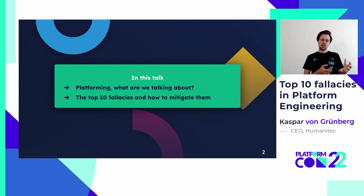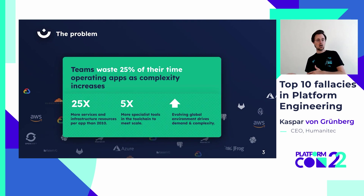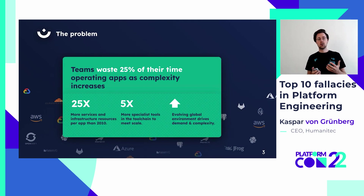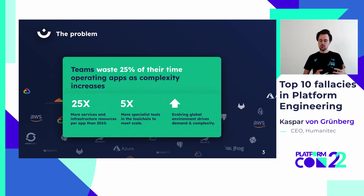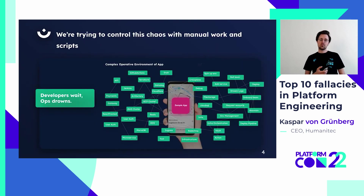To frame the problem, if you look at the complexity of the applications that we operate now in comparison to where we were 10 years ago, the average architecture of a modern cloud native application consists of 25 times more components than its equivalent 10 years ago. We have five times more specialized tools in the toolchain to actually meet that scale, and our scale is much, much larger. Many of you are serving thousands and hundreds of thousands of users all across the world.